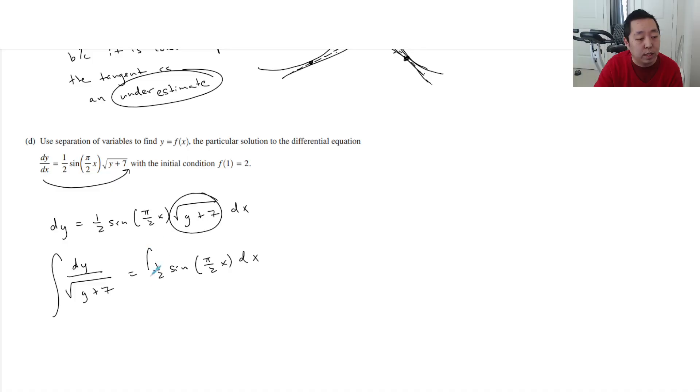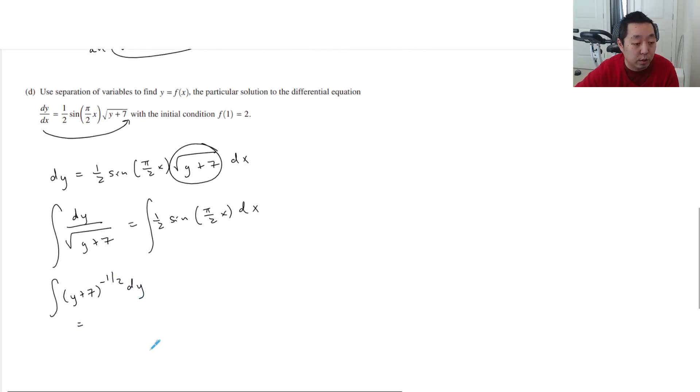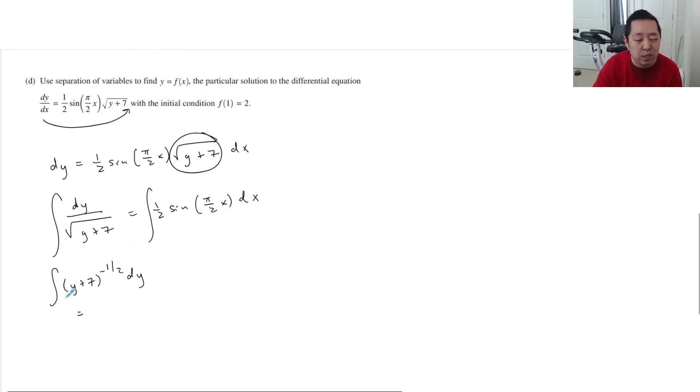And then we integrate both sides. This side I'm going to write as integral of y plus 7 to the negative one half dy. So do the left integral. That's just going to be, I mean, you can do a u sub, but the du is basically the same. So we're just going to do power rule. So that's y plus 7 to the positive one half divided by positive one half, which is just 2 root y plus 7.